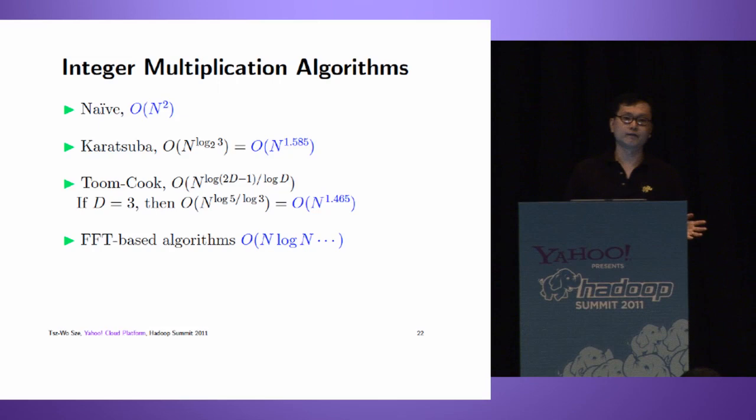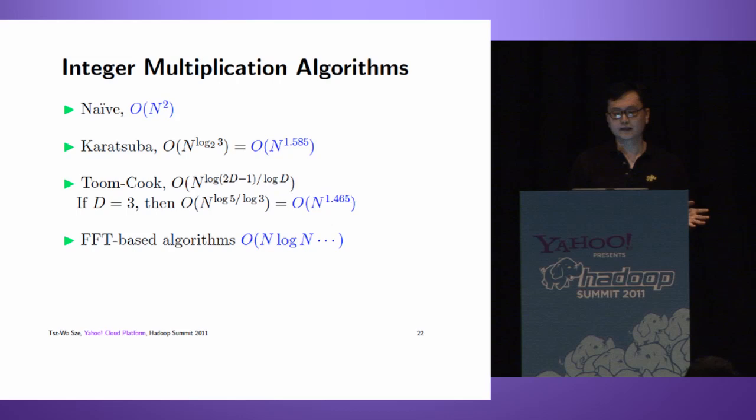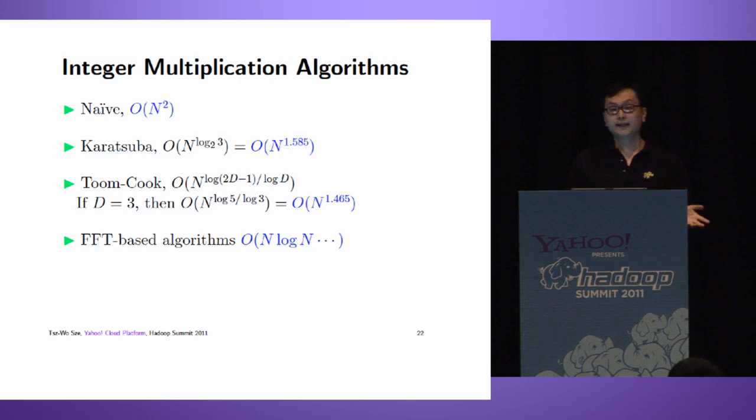How do we do integer multiplication? We have a variety of algorithms. The fastest algorithms are FFT-based. All FFT-based algorithms have running time O(N log N) with a tail, where N is the number of bits of the input integer. The scale we're talking about is terabit integers - using a terabyte to store a single integer.